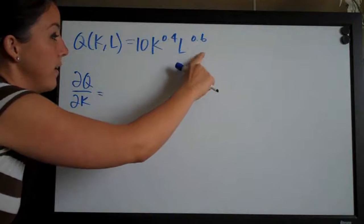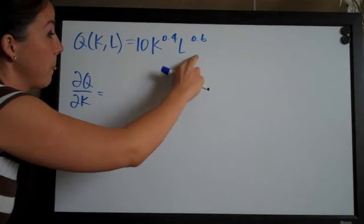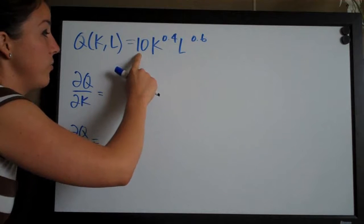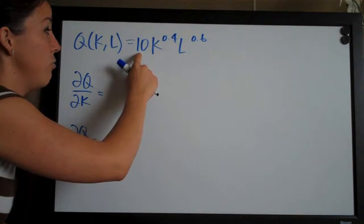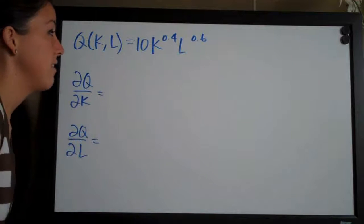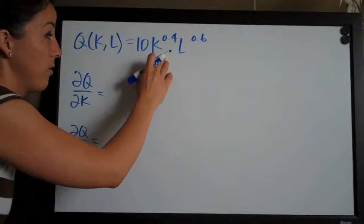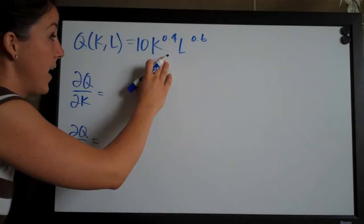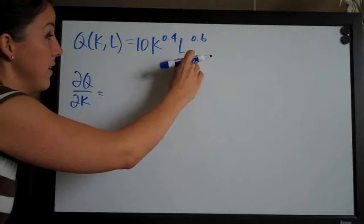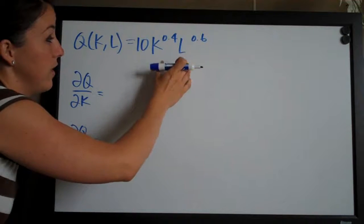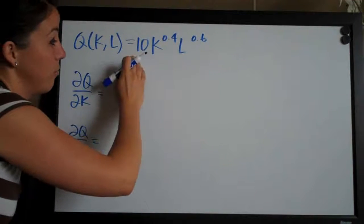This whole l to the 0.6 becomes just a number and it would get absorbed into the coefficient. It would be multiplied by 10 and you just have 10k to the 0.4 and then we would take the derivative with respect to k. So like I said, we're treating the other variable as a constant and in the case of this function, that second variable, since everything is multiplied together,